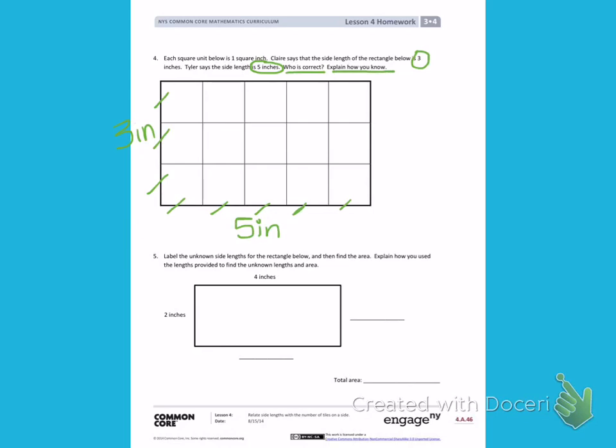I can see that the top measurement is 4 inches. In a rectangle, opposite sides are equal. So if the top is 4 inches, the bottom is also 4 inches.